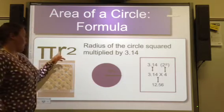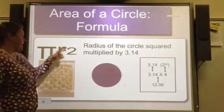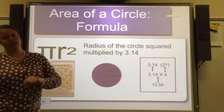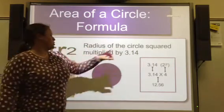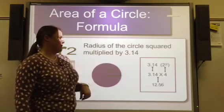Pi is 3.14. R stands for radius, and you square that number. Not times 2, but square it. Number times number. So the radius of a circle is squared and multiplied by 3.14.